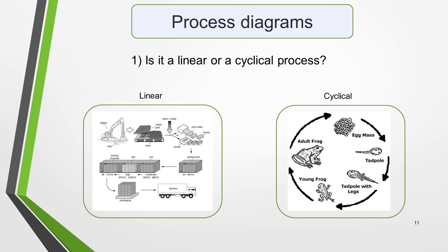Now we move on to a very different type of graphic: the process diagram. Here's a checklist of questions you can ask to help you understand and analyse them. Question 1: is it a linear or a cyclical process? A linear process starts and finishes at different places — it will often involve the manufacture or creation of something, with raw materials going in at one end and the finished product coming out at the other end, like the process of brick making. A cyclical process is one that goes back to the beginning and repeats over and over again, such as the life cycle of a frog.